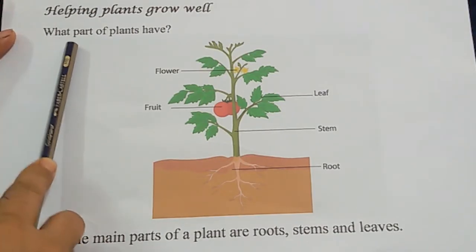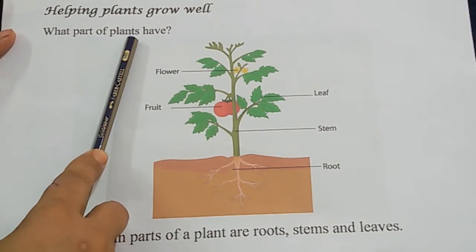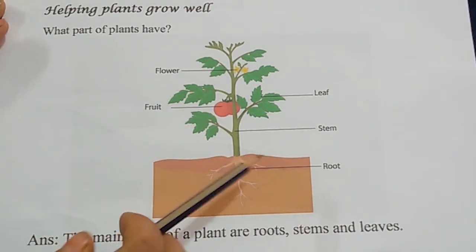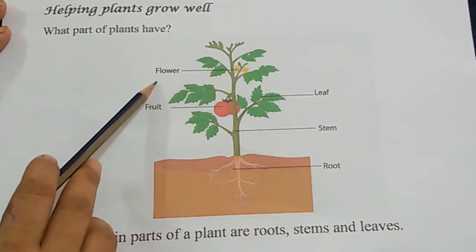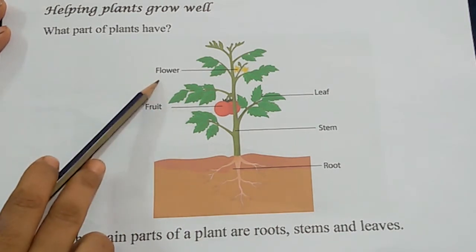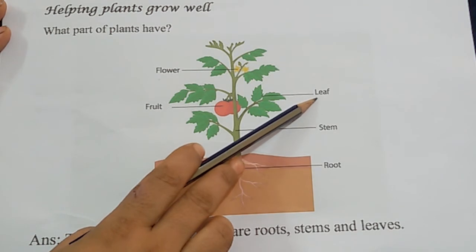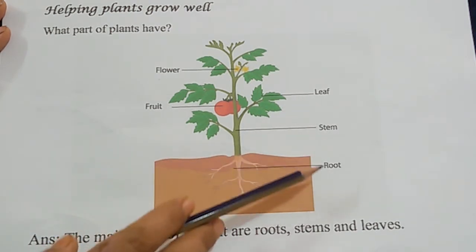First question is: what parts of the plants have? Look at the picture. Here are some parts of the plant: flower, fruit, leaf, stem and root.